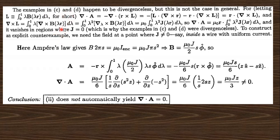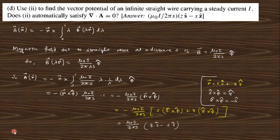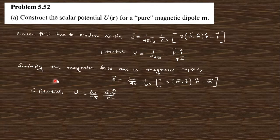There is a discussion here: examples c and d are two cases that are divergence-less, but this is not the case in general. The actual conclusion is that divergence of A being zero does not hold generally; in general, divergence of A is not equal to zero.